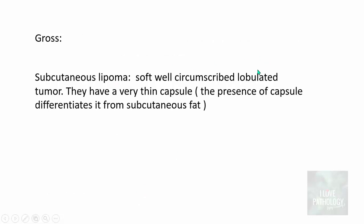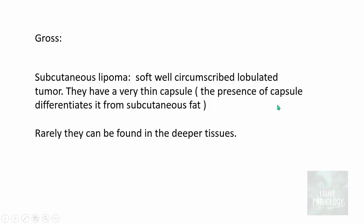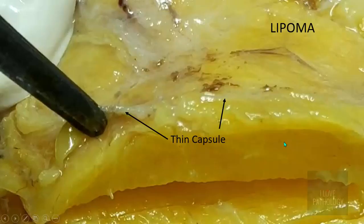How do lipomas appear grossly? Subcutaneous lipomas are often very well circumscribed, soft, lobulated tumors with a very thin capsule. Demonstration of the capsule is very important because the presence of a capsule is what differentiates it from normal subcutaneous fat. You can make out that this is a yellowish mass where the presence of the capsule is easily identifiable, though it is very thin.